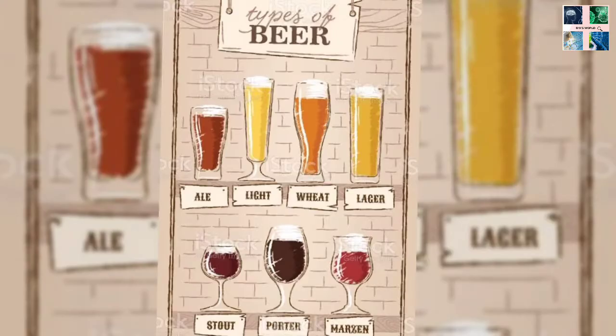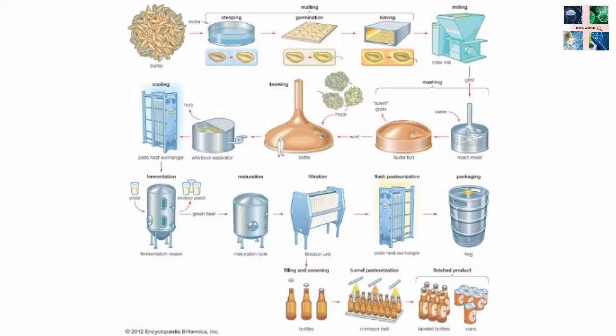Beer and ale production uses cereal grains such as barley, wheat, and rice. The complex starches and proteins in the grains must be hydrolyzed to a more readily usable mixture of simpler carbohydrates and amino acids.